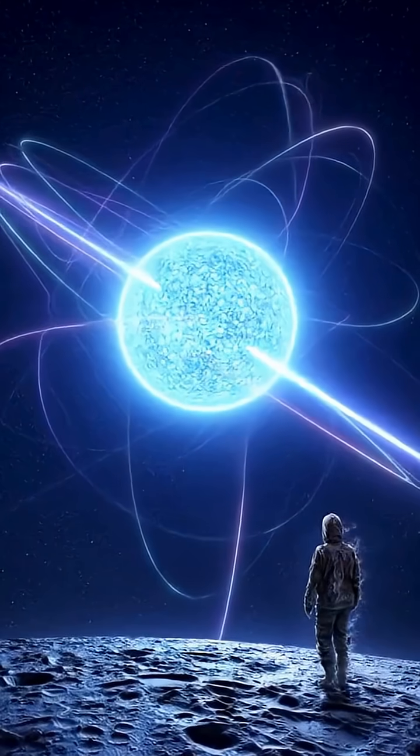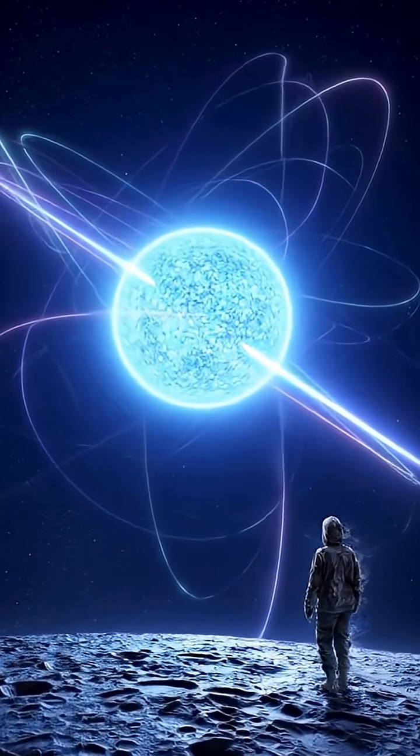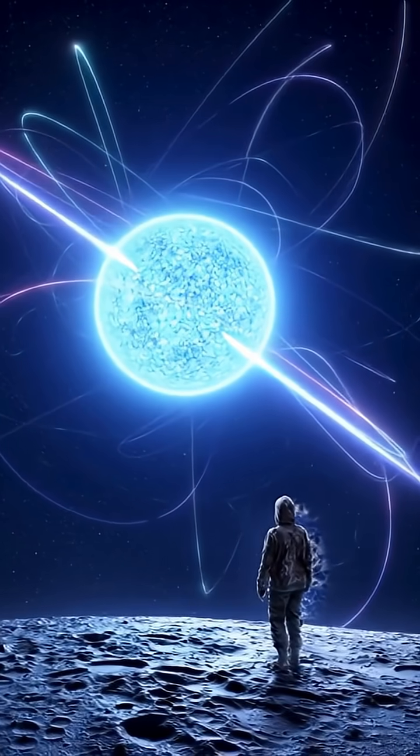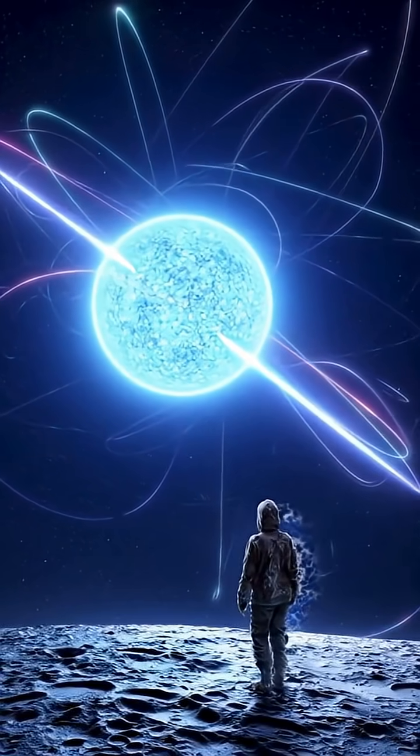Long before touchdown, brutal radiation shreds your DNA, while magnetic fields strong enough to bend atoms scramble your nerves and hijack your brain.